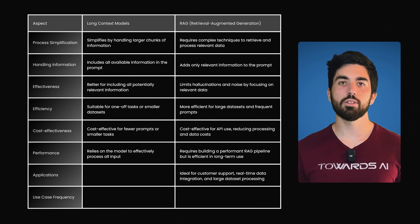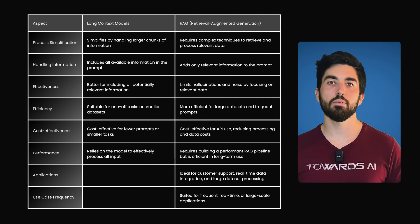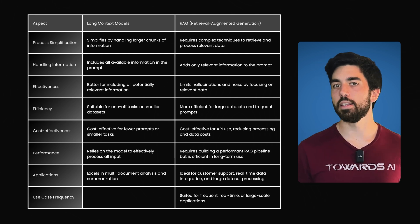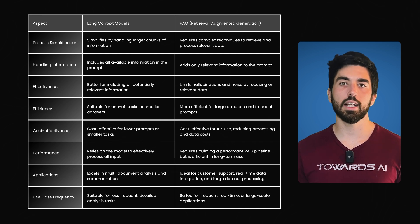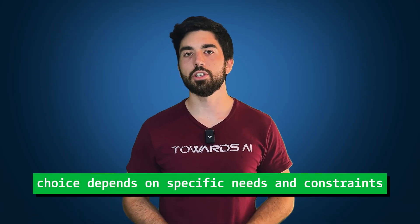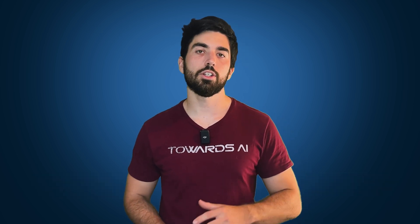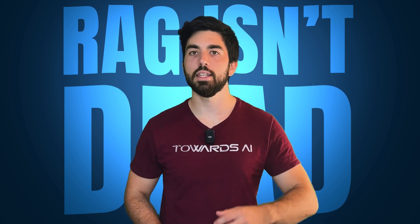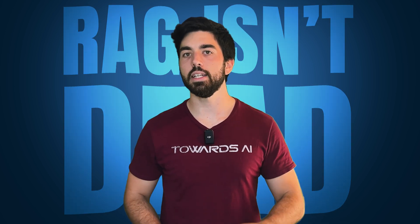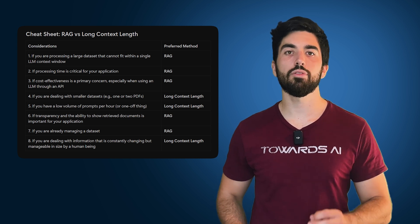In practice, RAG is well-suited for applications like customer support systems and real-time data integration, while long context models excel in tasks involving complex multi-document analysis and summarization. Ultimately, the choice depends on the application's specific needs and constraints. To answer the original question: RAG is not dead. Both methods have strengths in different scenarios, so it's up to you. Here's a table to help you decide how to proceed with your application.